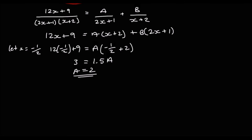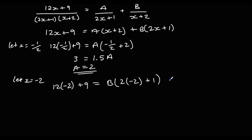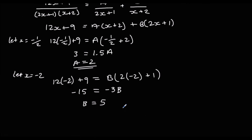We eliminate A by letting x equal negative 2: 12(−2) + 9 = B(2(−2) + 1), giving −24 + 9 = −15 equals −3B. Dividing both sides by negative 3, B is 5. So the full answer is 1 plus 2 over (2x + 1) plus 5 over (x + 2).